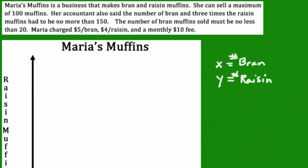Let's look at the first sentence. The first sentence says Maria is in the business bran and raisin muffins. We took care of that first sentence when we declared our variables. Now let's look at the second sentence.